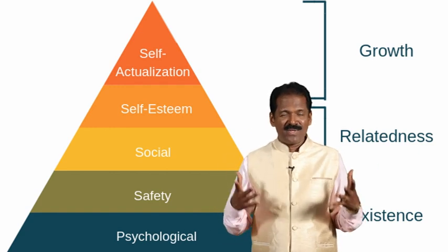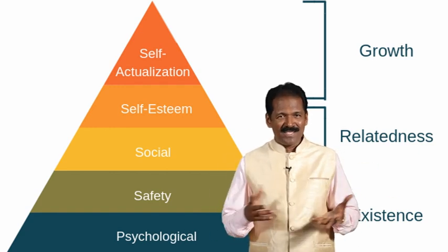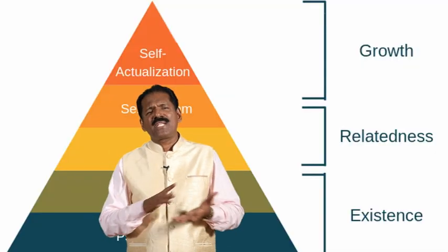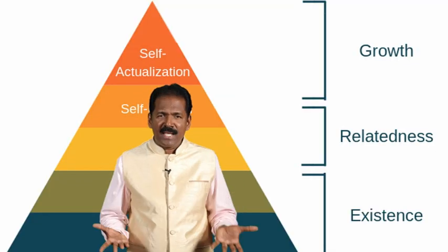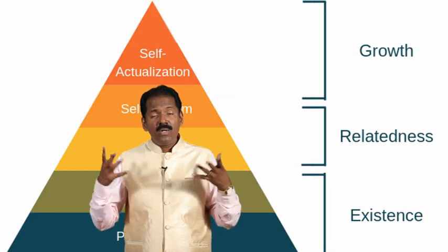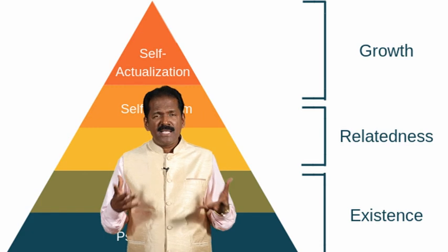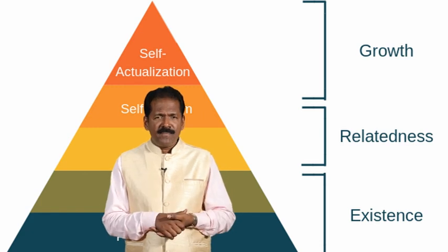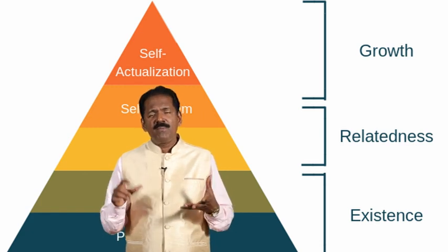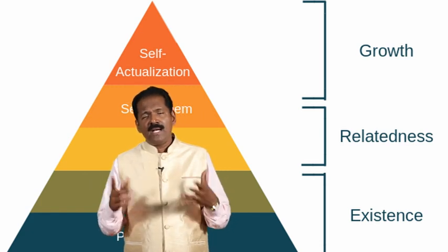Priority of needs differs from person to person. However, Alderfer has been able to prioritize and classify these needs. According to him, all three needs can be active at the same time — all three exist — but at any given point in time, one will be more dominant than the other two.